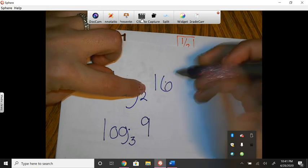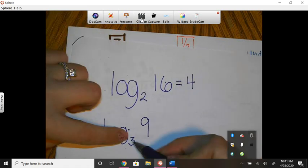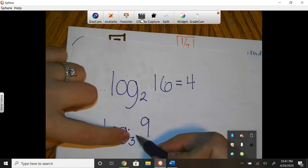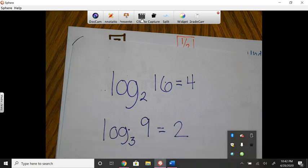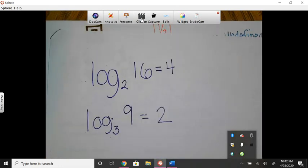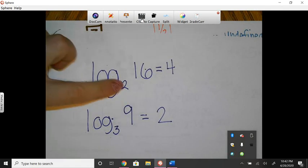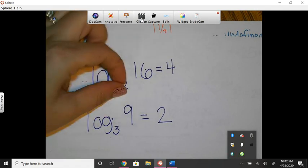So in this case, it would be 4. This one here, this is saying 3 to what exponent would make 9? And that would be 2. So again, don't let logs scare you or make you feel confused. Just tell yourself when you see LOG, it means I'm finding the exponent for this number that's written down below here.